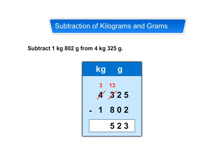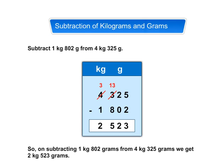Since we have borrowed 1 kilogram from 4 kilogram, so we are left with 3 kilograms. Now, subtract 1 kilogram from 3 kilogram. We get 2 kilogram. So, on subtracting 1 kilogram 802 grams from 4 kilogram 325 grams, we get 2 kilogram 523 grams.